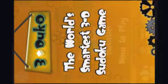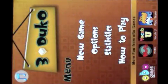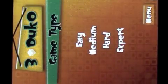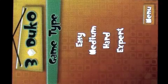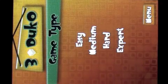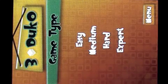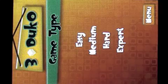Let's see how we play 3DUCO. From the main menu, select New Game. This will open up the Game Type screen. You will have four levels to choose from. Levels are determined by the number of givens, or numbers you are given, in the puzzle. The less numbers you are given, the harder the puzzle. Let's select Medium.